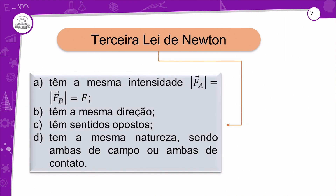Só vai acontecer se tiver mesma natureza — se não, não teremos ação e reação. A força aplicada um sobre o outro tem a mesma intensidade. Por exemplo, chuta uma bola com o pé: a força que a bola aplica no pé é a mesma força que o pé aplica na bola — força de contato. A força de atração da Lua com a Terra — força de campo gravitacional — é a mesma em ambos os sentidos. Ação e reação nunca vão atuar no mesmo corpo.